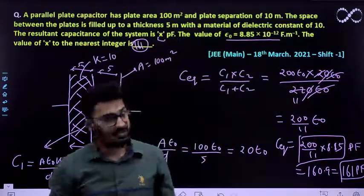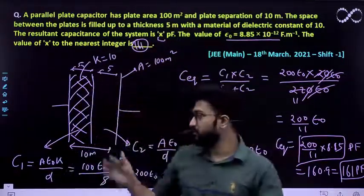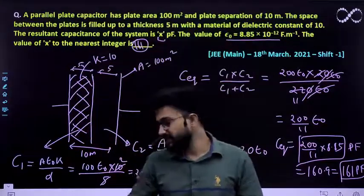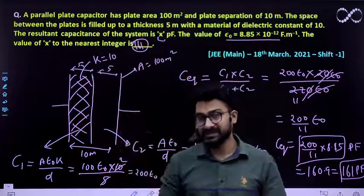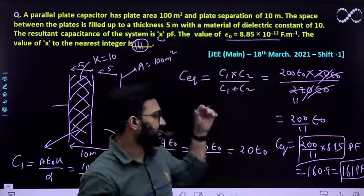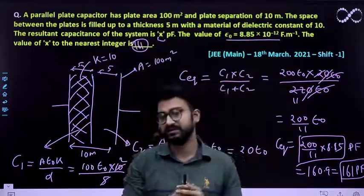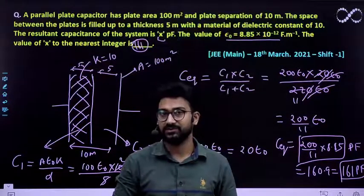Bahut easy question hai. Isko do combination of resistance, do combination of capacitance ko lena hai. These two capacitances would be in series and series mein effective capacitance is type se nikalte hain aur aasani se value put karenge answer aa jayega. I hope this question is clear to everyone. Thank you.